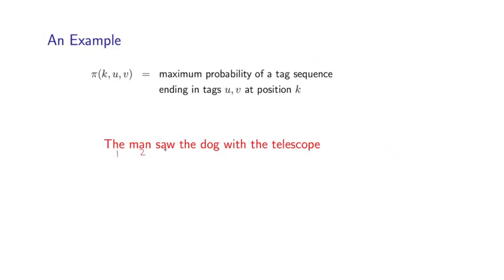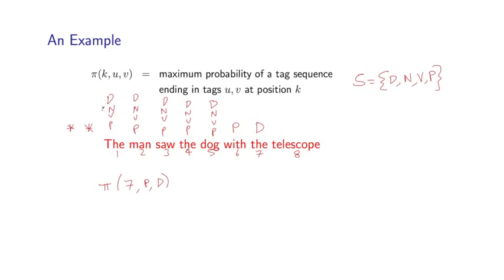So let's number these words. So 1, 2, 3, 4, 5, 6, 7, 8. And let's say we consider the entry pi 7 of p and d. What does that correspond to intuitively? So I'm going to fix these two tags here to be p and d. And let's just assume that our set s is equal to d, n, v, p. So if we look at any of the preceding positions, we have four possible tags at each position. So we have all of these possibilities. Let me just write these out.